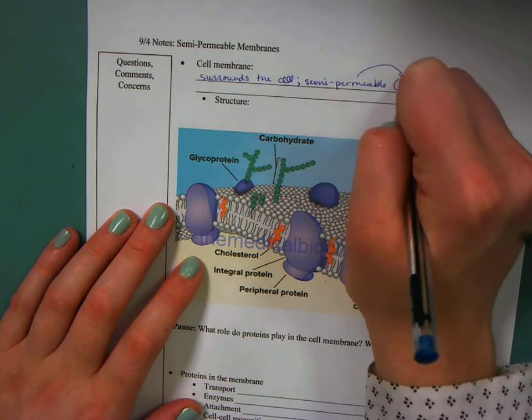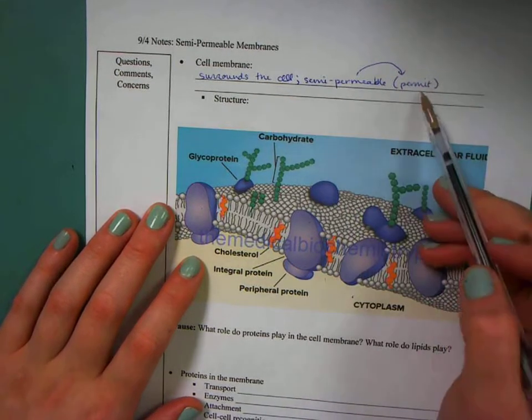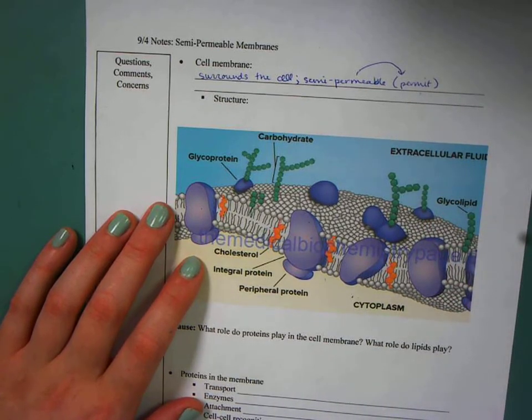And think about permeable as permit. So it permits some things to come in and out of the cell just depending on their size and their shape.